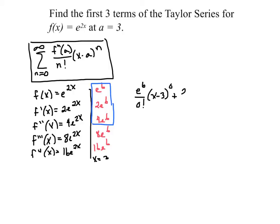Then we've got 2e to the 6th over 1 factorial, and then x minus 3 to the 1st. Then we're going to have 4e to the 6th over 2 factorial, x minus 3 squared.